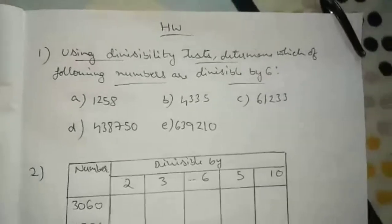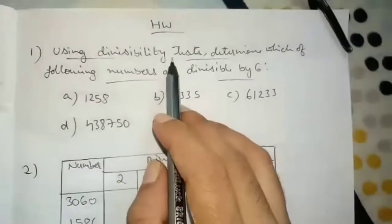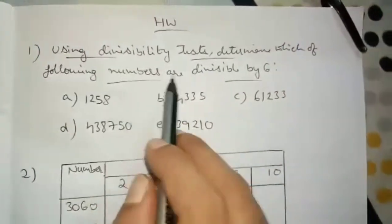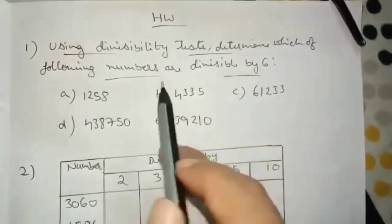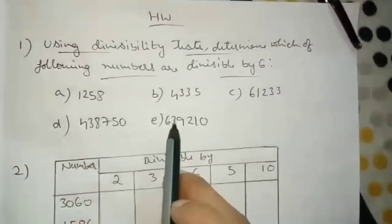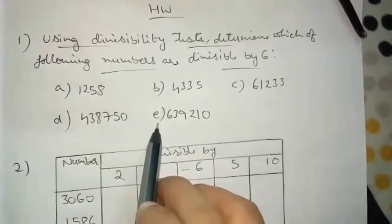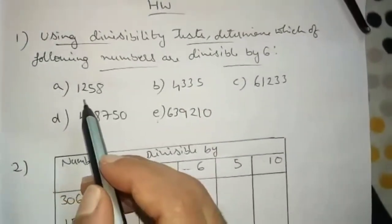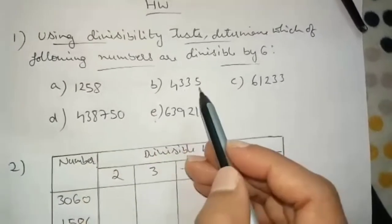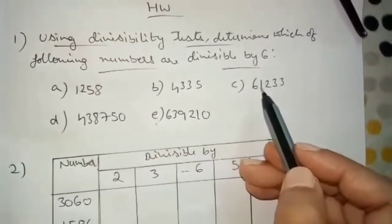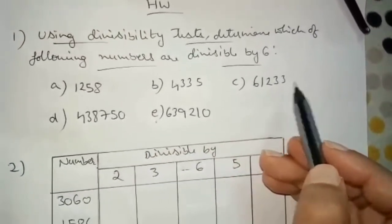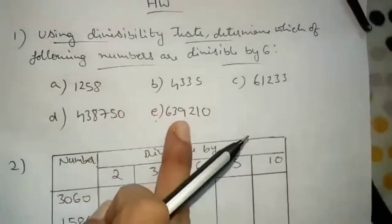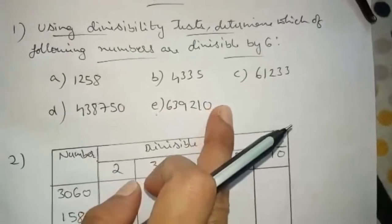Students, take down some homework problems. First one: using divisibility tests, determine which of the following numbers are divisible by 6. Check 1,258 — 4,335 — 61,233 — 4,38,750 — and 6,39,210.